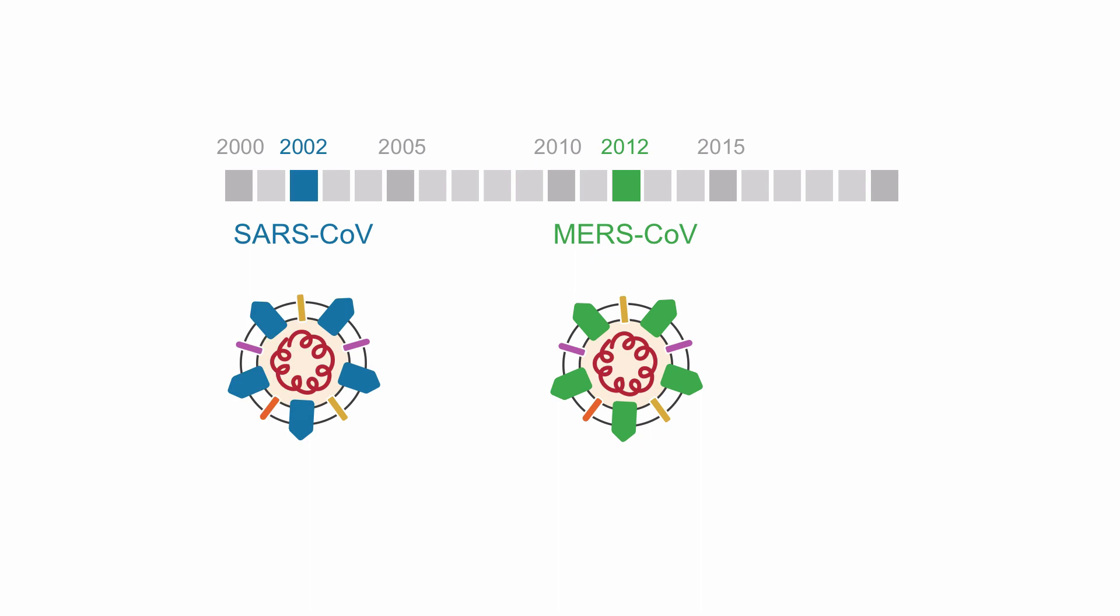In the last 20 years, coronaviruses were the cause of two outbreaks: SARS-CoV in 2002-2003, and MERS-CoV in 2012. In 2019, another coronavirus, SARS-CoV-2, emerged in Wuhan, China.